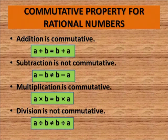When it comes to addition, we say addition is commutative. That means if we have two rational numbers a and b, then a plus b will be equals to b plus a. So even if you change the order of the rational numbers, their sum would remain the same. Now, commutative property does not hold good for subtraction — that is, a minus b is not equals to b minus a.